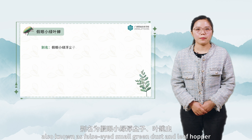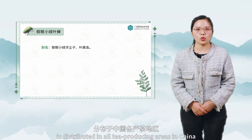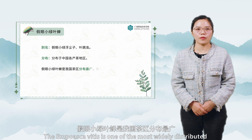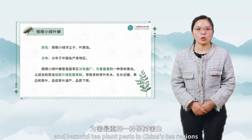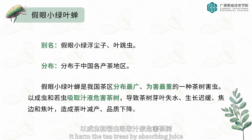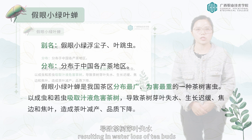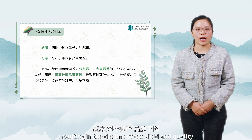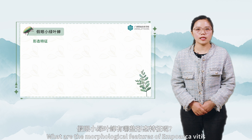Empoasca vitis, also known as false-eyed small green leafhopper, is distributed in all tea-producing areas in China. It is one of the most widely distributed and harmful tea plant pests. It harms tea trees by absorbing juice during both the adult and nymph periods, resulting in water loss of tea buds, slow growth, and scorched edges, causing decline in tea yield and quality.